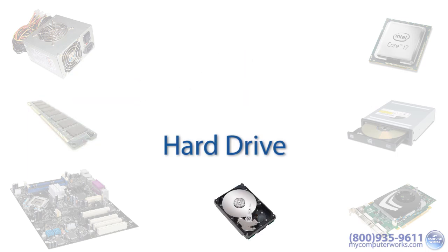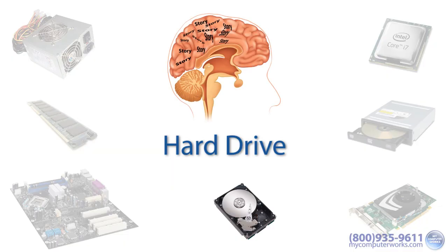The hard drive acts as the long-term memory in your computer. All data accessed by the processor and RAM comes from the hard drive. Think of RAM and the hard drive the same way as your brain works. For example, let's say you're telling someone a story about your life — before you start telling the story you need to temporarily copy it from your long-term memory to your short-term memory, so all the words are there and easily accessible.